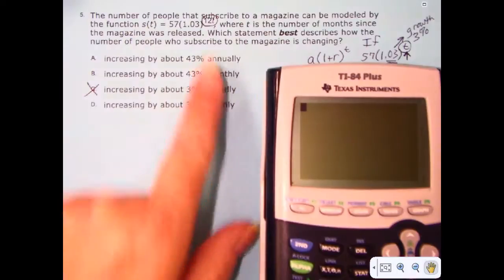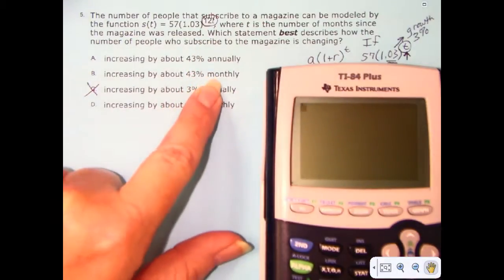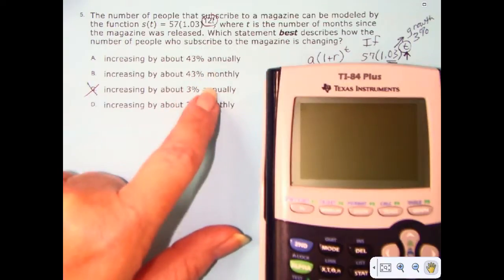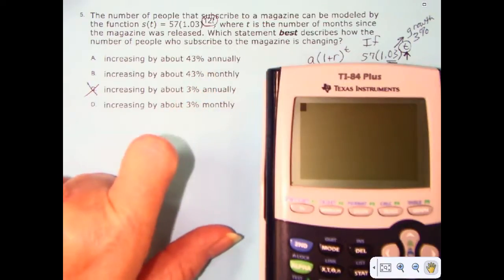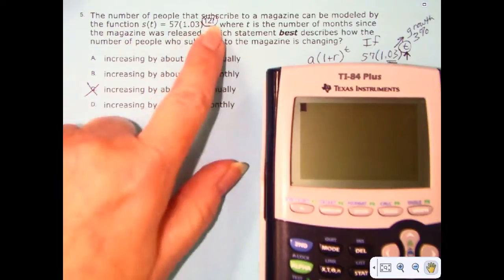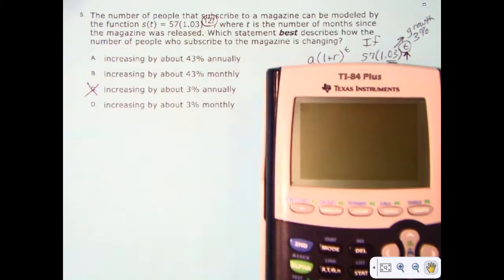We have a function here, and I'm looking for what happens to it monthly, what happens to it annually. So I'm going to look at the difference for, let's say, one month to two months.